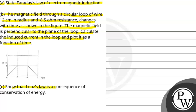For this, show that Lenz's law is a consequence of conservation of energy. So three parts are: first, we have to explain the paradigm of electromagnetic induction. In the second part, we have to explain the induced current. In the third part, we have to show that Lenz's law is a consequence of conservation of energy.